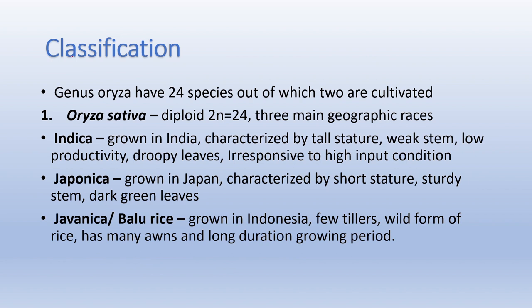Regarding classification: the genus Oryza has 24 species, of which 2 are cultivated — Oryza sativa and Oryza glaberrima. Oryza sativa is a diploid species with chromosome number 2n = 24. There are three main geographic races of Oryza sativa: indica, japonica, and javanica (also called bulu rice). Indica is grown in India and is characterized by tall stature, weak stem, low productivity, droopy leaves, and is unresponsive to high input conditions.